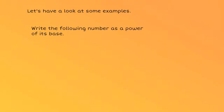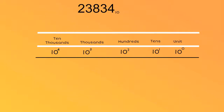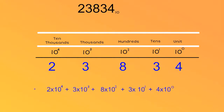Write the following number as a power of its base. In the base 10 place value system, we count in multiples of 10. So if I place my number in the place value column, then I can write it in expanded form like this.